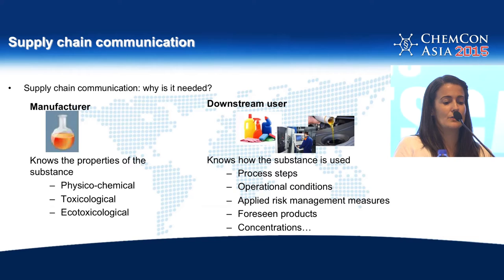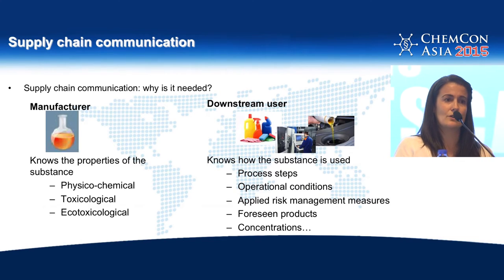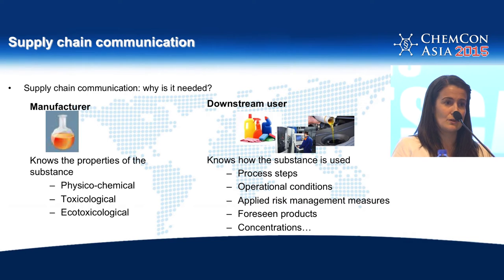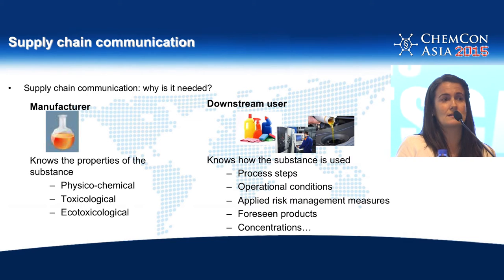Manufacturers of chemicals know their products — they know what they produce, so they know the properties of the substance. They know the toxicological profile and ecotoxicological effects. But then they need to assess these substances to ensure that they are used safely. For that, they need to know how the substances are used, and how they are used in the supply chain.